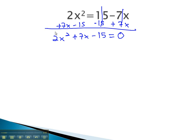Now we're ready to use the quadratic formula, where a is 2, b is 7, and c is negative 15. Plugging our values into the quadratic formula, x is equal to the opposite of b, or negative 7, plus or minus the square root of b, or 7 squared, minus 4a, or 2, times c, which is negative 15, all over 2a, which is 4.